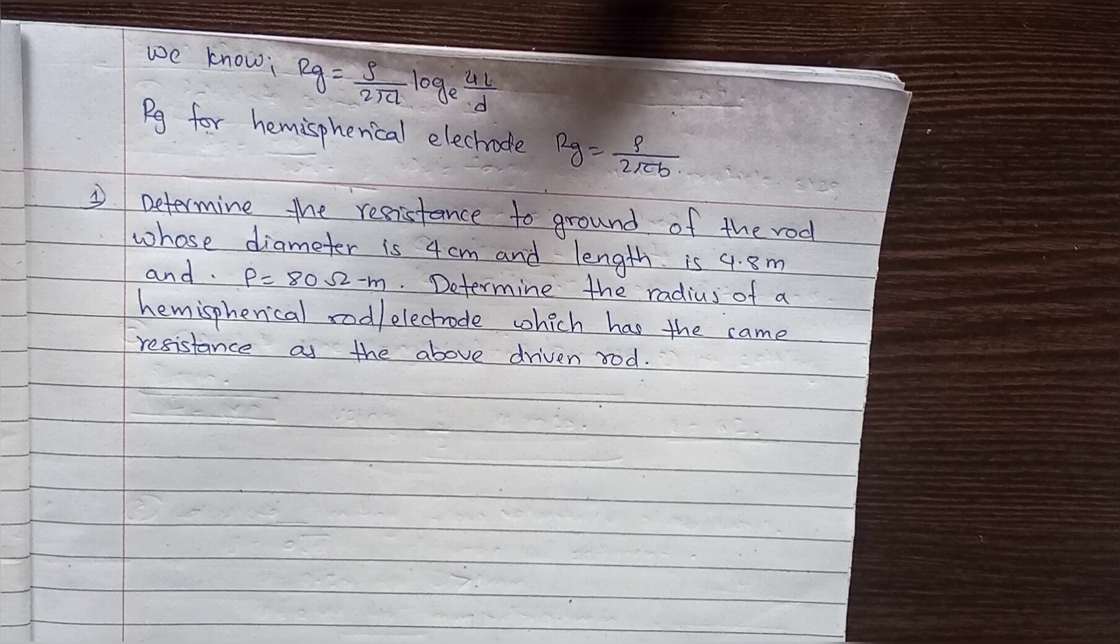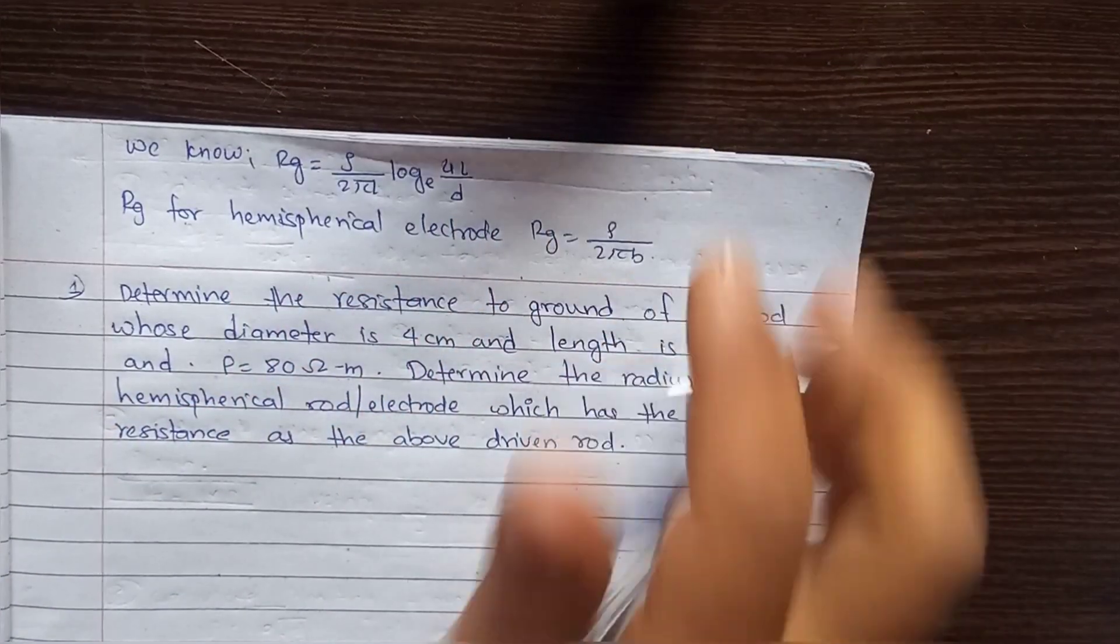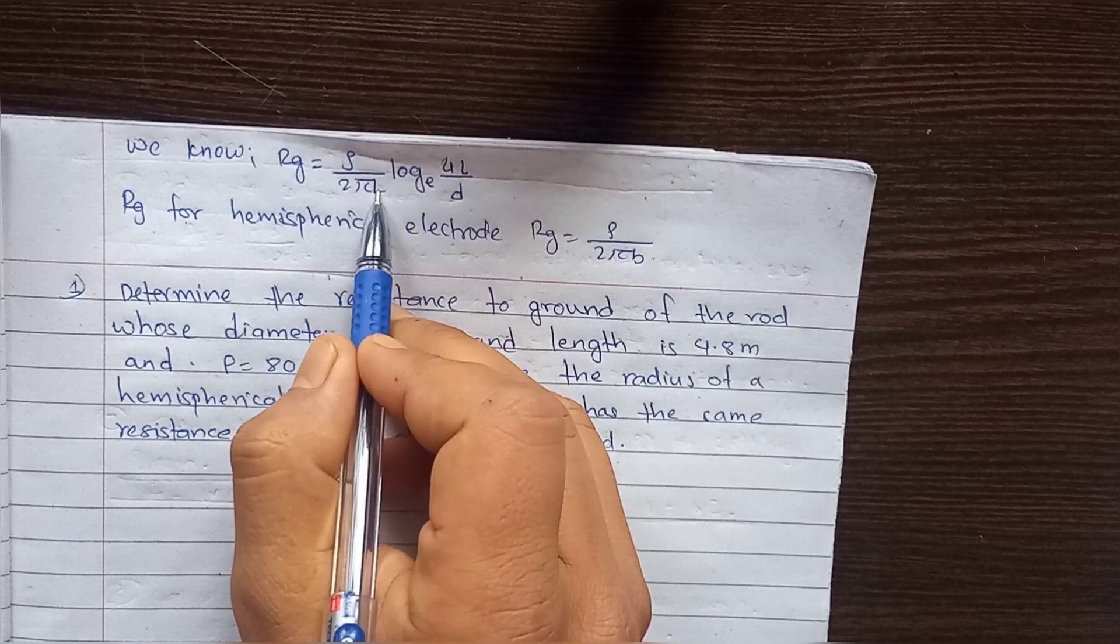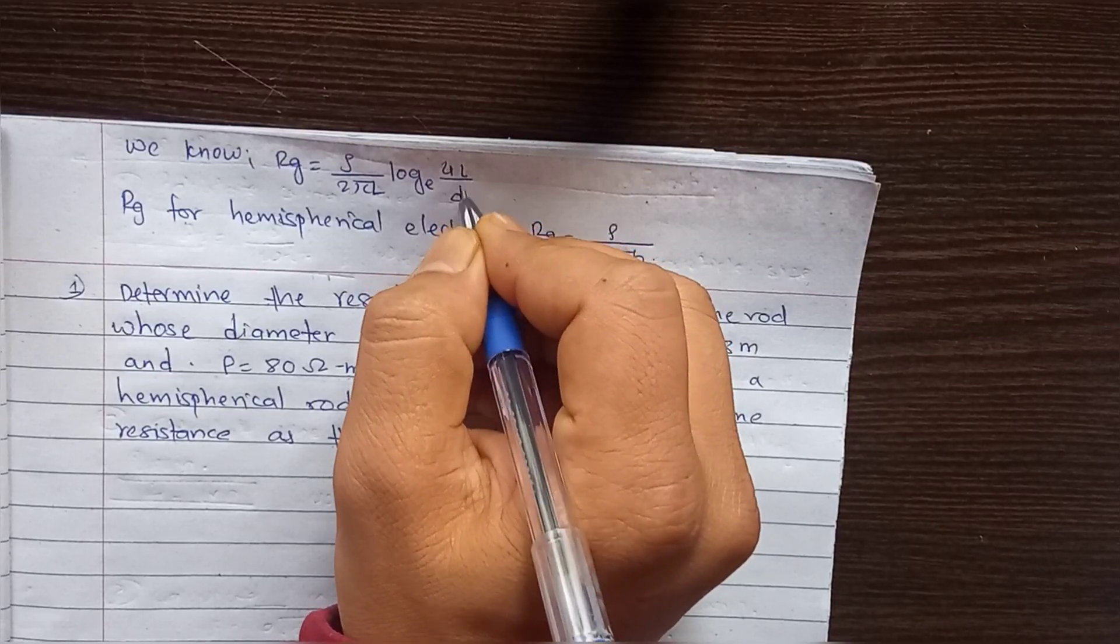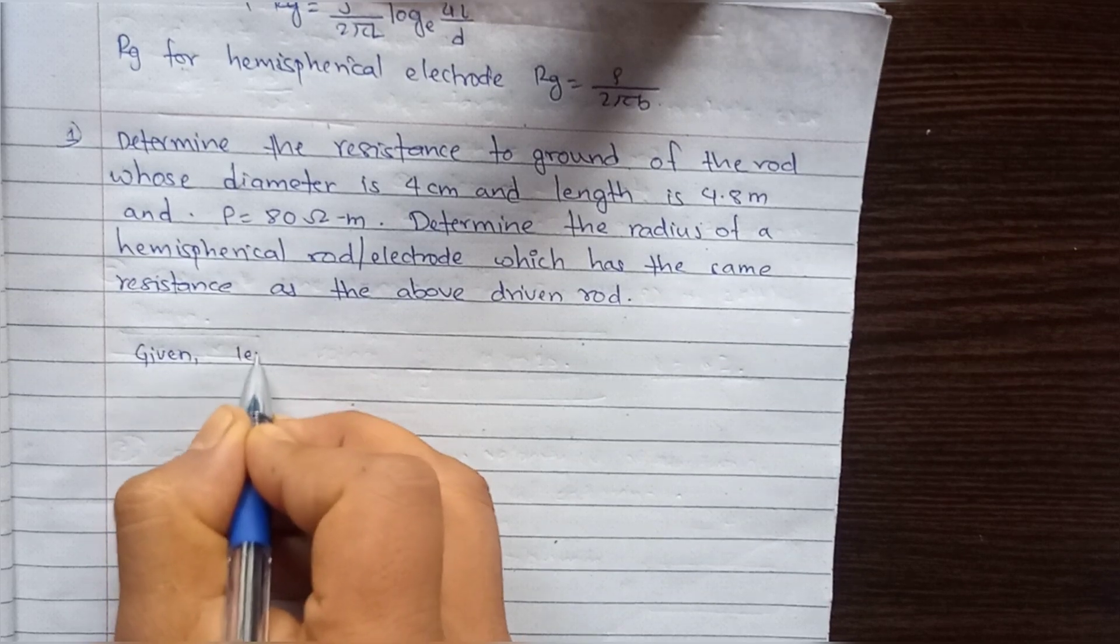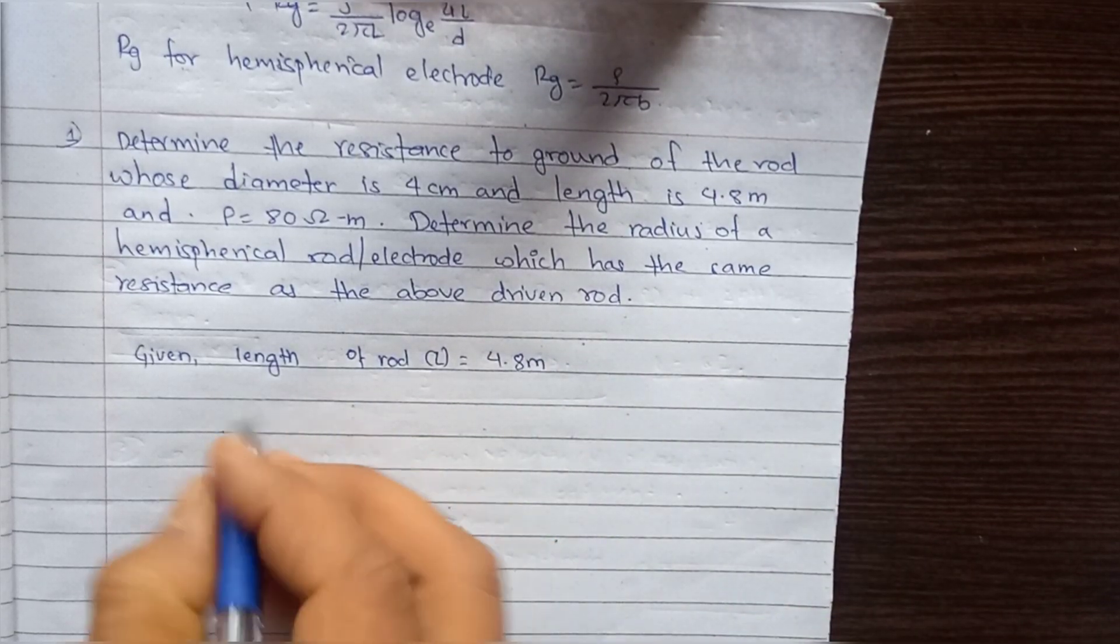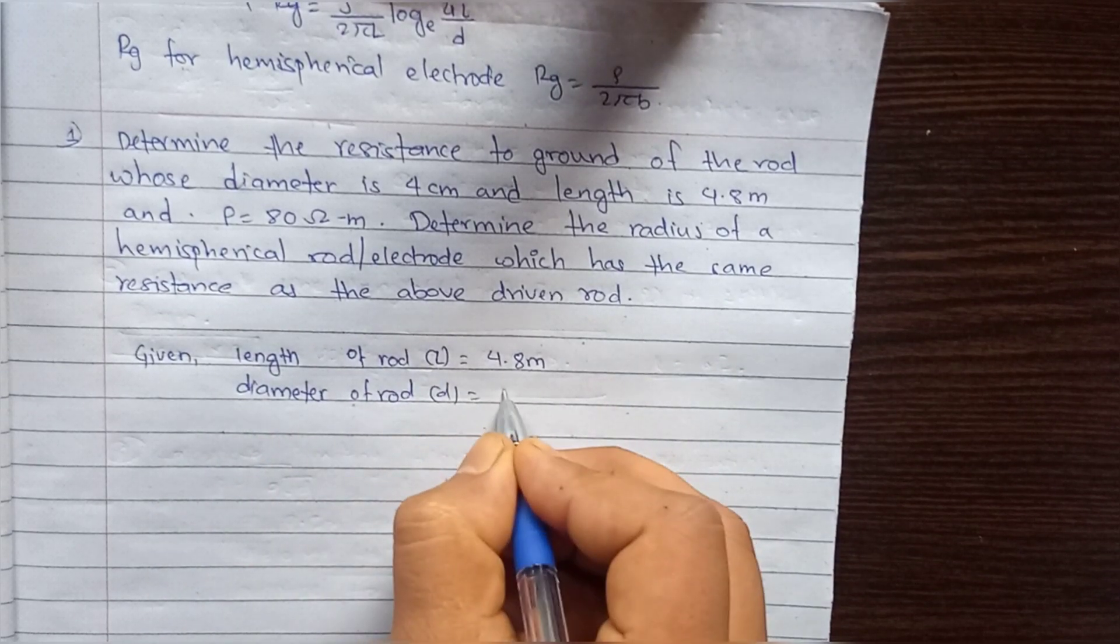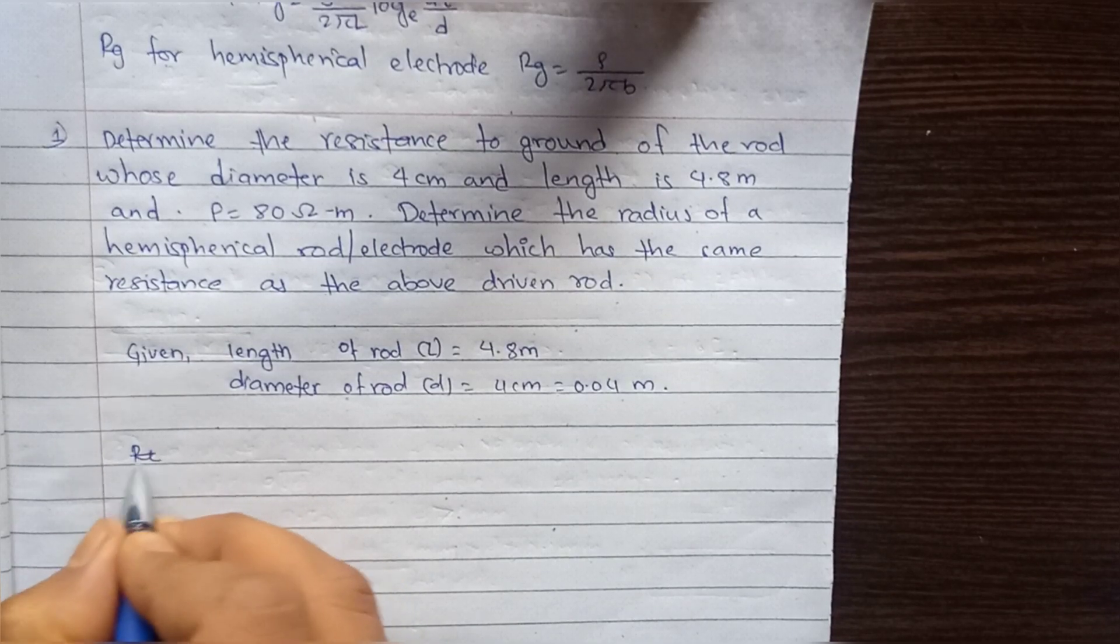The resistance to ground for the rod: we have the formula Rg = ρ/(2πL) × ln(4L/d), where L is the length of the rod and d is the diameter. Given: the length of the rod is 4.8m and the diameter of the rod is 4cm or 0.04m.